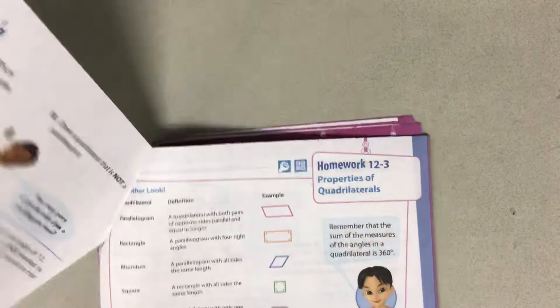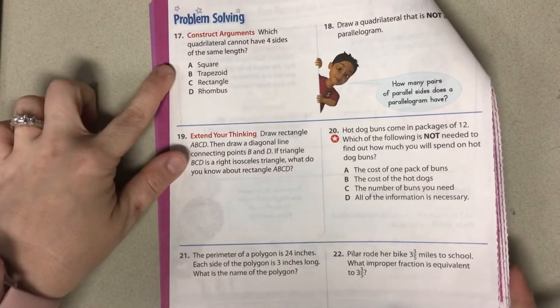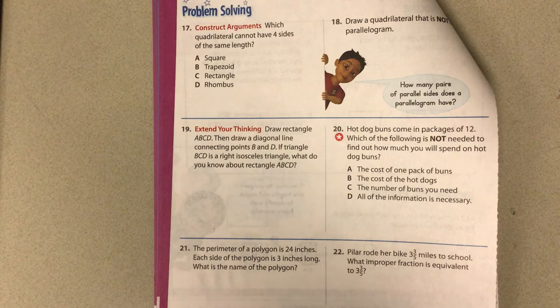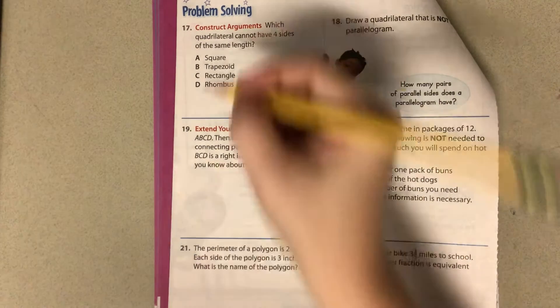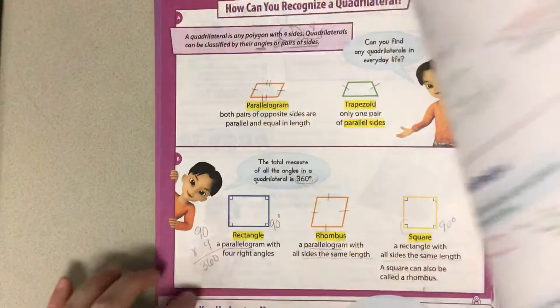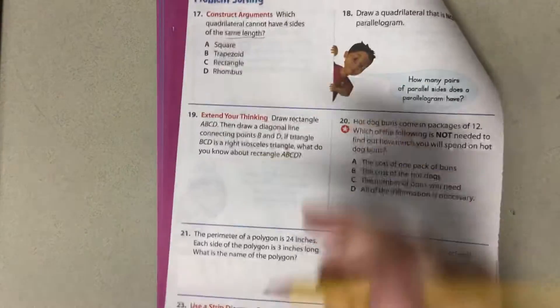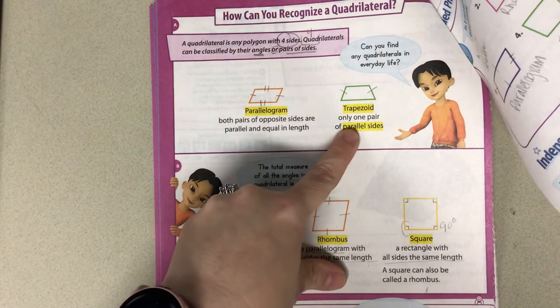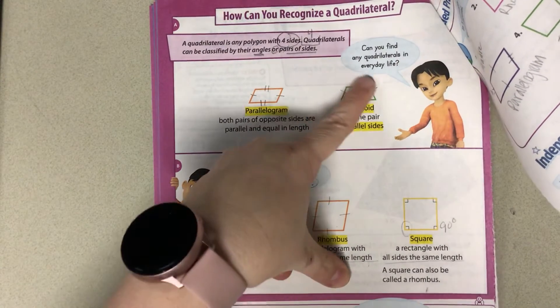We're going to look at number 17. Which quadrilateral cannot have four sides of the same length? So we're talking about same length here. So let's go back to our notes. A square has all sides same length, so that can't be it. A trapezoid has only one pair of parallel sides, so are those all going to be the same length? Maybe not.